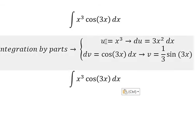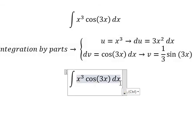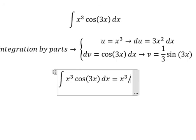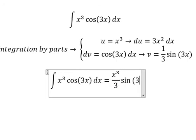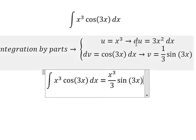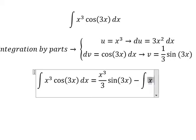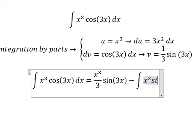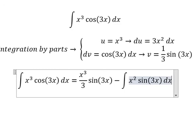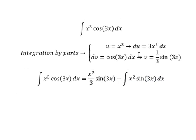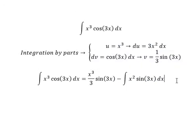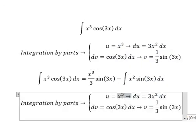So we have u multiplied with v. For the next term, du multiplied with v, we have negative 3 with 1 over 3, which we simplify. We get x squared sine 3x dx. Now we use the same technique.